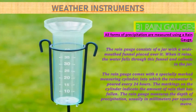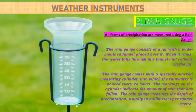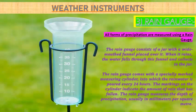Now let's know about the rain gauge. All forms of precipitation — liquid and solid — are measured using a rain gauge. The rain gauge consists of a jar with a wide-mouth funnel placed over it. When it rains, water falls through the funnel and collects in the jar. The rain gauge comes with a specially marked measuring cylinder, into which the rainwater is poured every 24 hours, so we can know how much water has been collected.